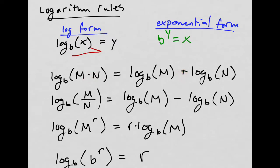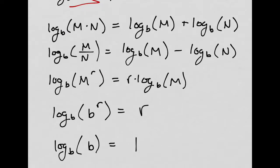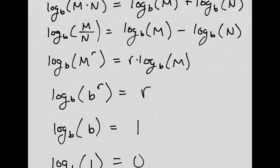If you multiply inside a log, you can change it to addition on the outside. Divide inside a log, you can get subtraction on the outside. If you have an exponent on the inside of the log, you can move it out as a coefficient. That's not the same as if you had the R on the outside there. That means something different. So, careful with that.